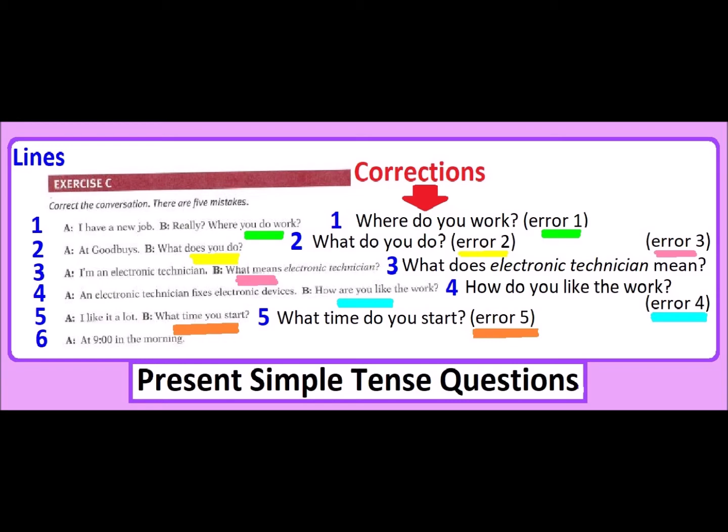In line number two, they made a mistake, DOES with YOU. YOU only uses DO. So our correction is WHAT DO YOU DO? This question refers topic-wise to work, to profession. We can also ask 'what's your job' or 'what's your profession' or WHAT DO YOU DO?